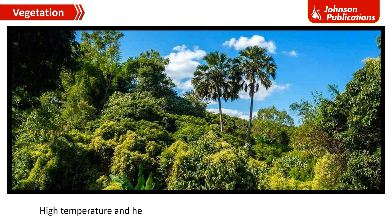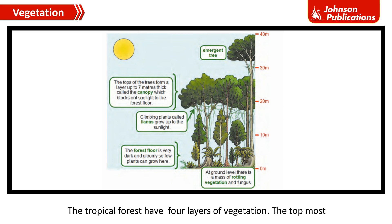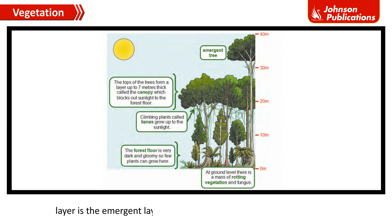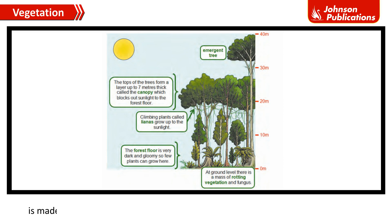High temperature and heavy rainfall help in the growth of natural vegetation. The tropical forests have four layers of vegetation. The topmost layer is the emergent layer, where trees grow up to 70 m. The second layer is called the canopy, where trees grow up to 40 m. The third layer, the understory, is made up of small trees, shrubs, ferns, and creepers.